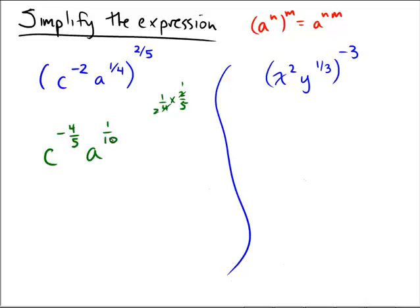Now for politeness sake, a lot of these problems sometimes say don't have negative exponents, or they don't want negative exponents. So let's call this a to the 1 over 10, and then we'll put the c to the 4 fifths in the bottom, again just for politeness sake.